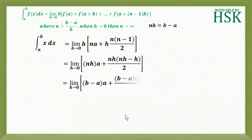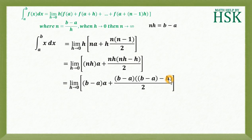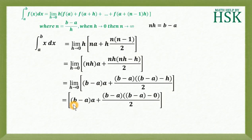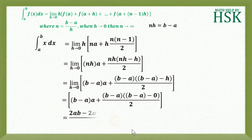Placing nh = b - a, we get the limit as h→0 of (b - a)·a + (b - a)·(b - a - h)/2. We only have h remaining for the limit; there is no indeterminate form. Applying the limit h→0, this becomes (b - a)·a + (b - a)·(b - a - 0)/2.